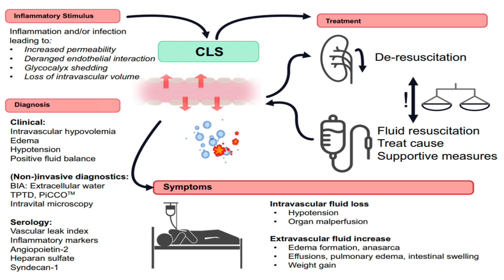Symptoms result from two processes: intravascular fluid loss causes hypotension and organ malperfusion due to inadequate blood flow; while extravascular fluid increase leads to edema and swelling, anasarca (severe body-wide edema), pulmonary edema (fluid in the lungs), intestinal swelling, and weight gain due to fluid retention.